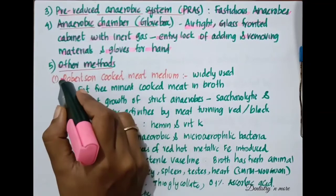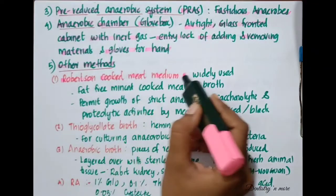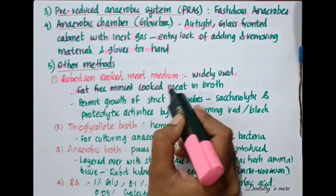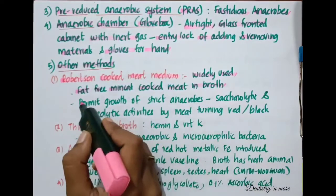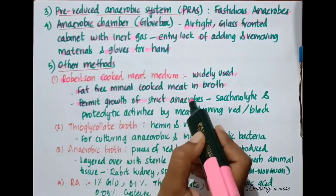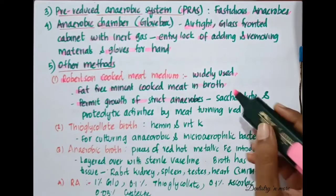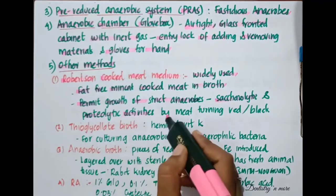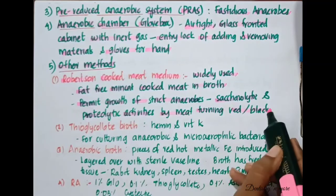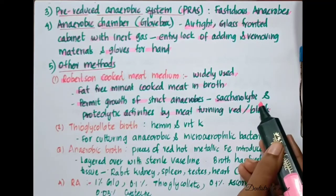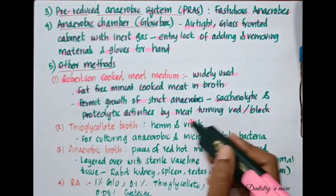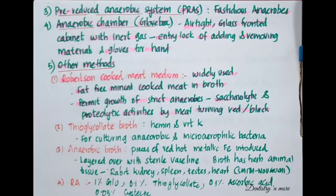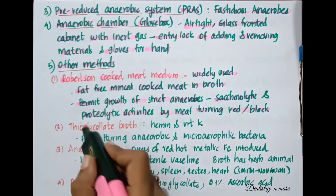Other methods of anaerobiasis include Robertson's cooked meat medium, a widely used method using fat-free minced cooked meat in broth. It permits growth of strict anaerobes and also indicates saccharolytic and proteolytic activities by the meat changing color — if the bacteria are saccharolytic it will turn red, and if proteolytic it will turn black.